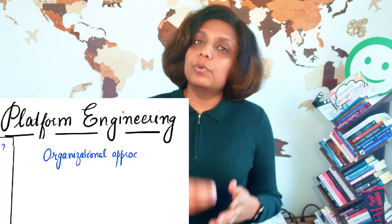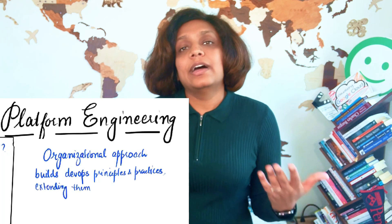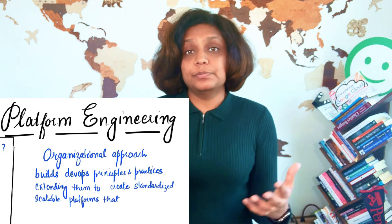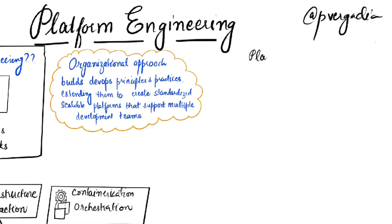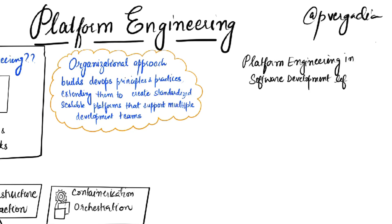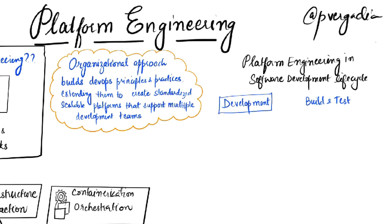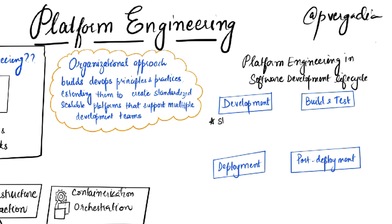Platform engineering serves as the underlying foundation that supports the entire software development lifecycle. It provides the tools, the infrastructure, and the processes that development teams rely on — from the initial stages of development all the way to production deployments and ongoing operations. In the development phase, platform engineering provides developers with standardized development environments, version control systems, and local testing capabilities that mirror production settings.